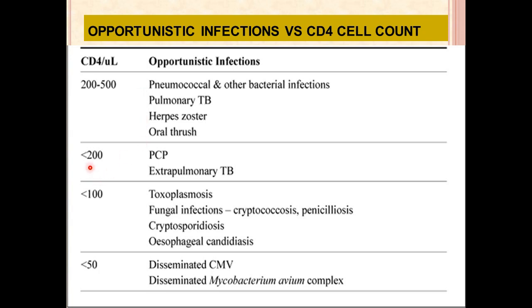When the cell count is less than 200, the individual is at risk of pneumocystis pneumonia and extrapulmonary tuberculosis. When less than 100, risks include toxoplasmosis, fungal infections like cryptococcosis, penicillosis, cryptosporidiosis, and esophageal candidiasis. When the count is less than 50, risks include disseminated cytomegalovirus and disseminated Mycobacterium avium complex.